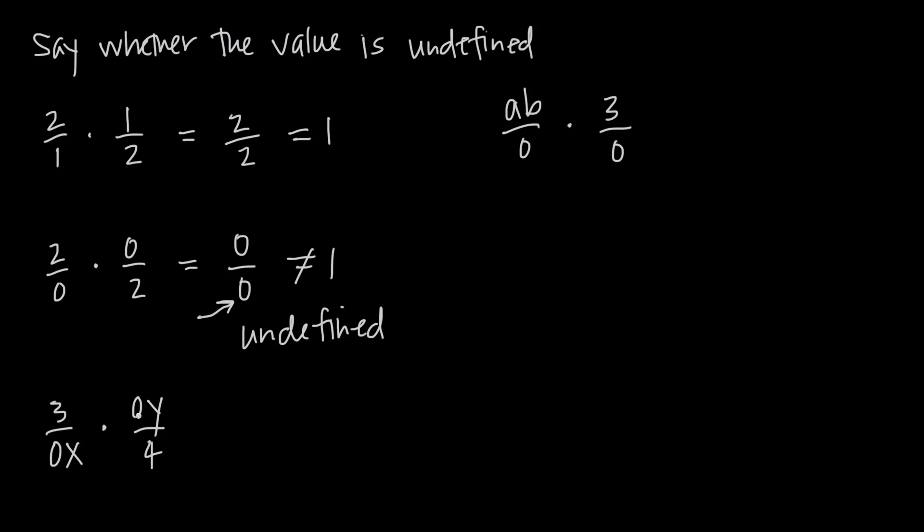So let's look at this other example here to show that this is also undefined. If we multiply our numerators together, we get 3 times 0 times y. Well, because we're multiplying by 0, we're still just going to get 0 in our numerator.